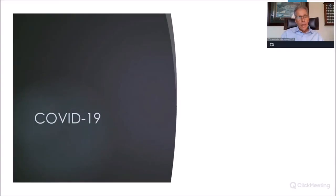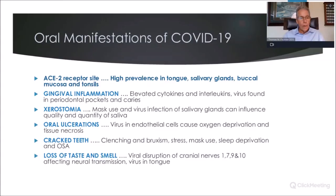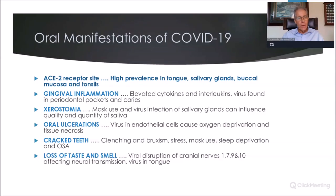We'll do a little review of COVID-19. Thankfully, it's not as bad as it was, but it will be here forever. We should be aware of what the SARS-CoV-2 virus does and how it impacts oral health. The ACE2 receptor sites where the virus attaches have a high prevalence in the tongue, salivary glands, buccal mucosa, and tonsils — so the mouth is highly infected when patients get COVID-19.